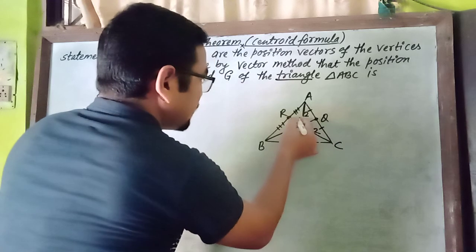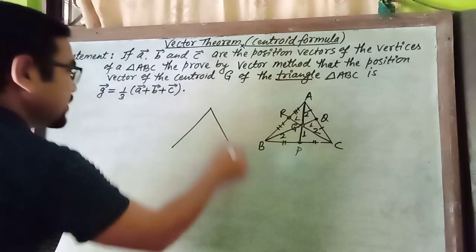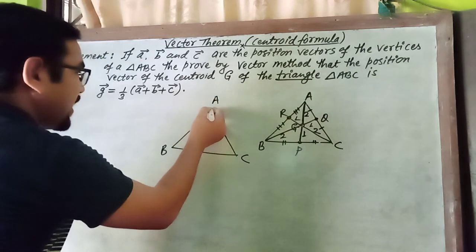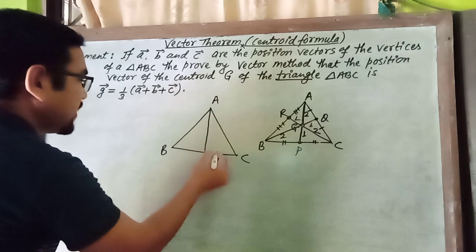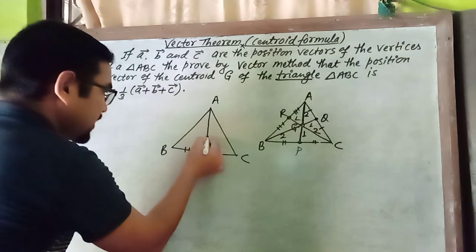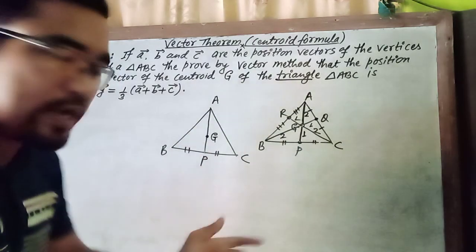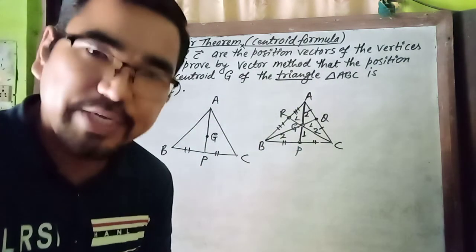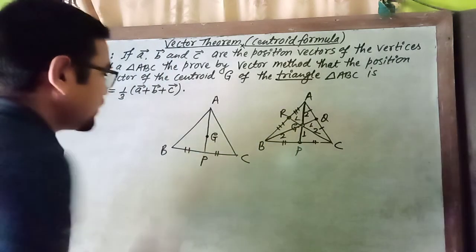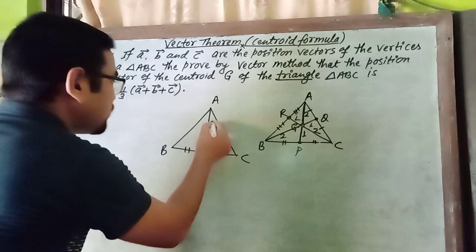So everybody understands: ABC is a triangle, and we can draw the median AP. G is the centroid of the triangle, which is the point of intersection of all the medians. This G divides the median AP in the ratio 2:1, meaning the part from the vertex to G is double the part from G to the midpoint.